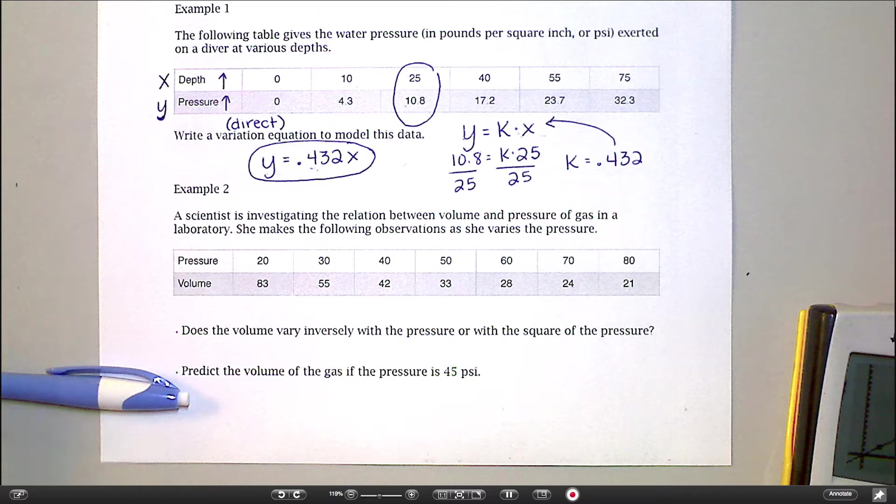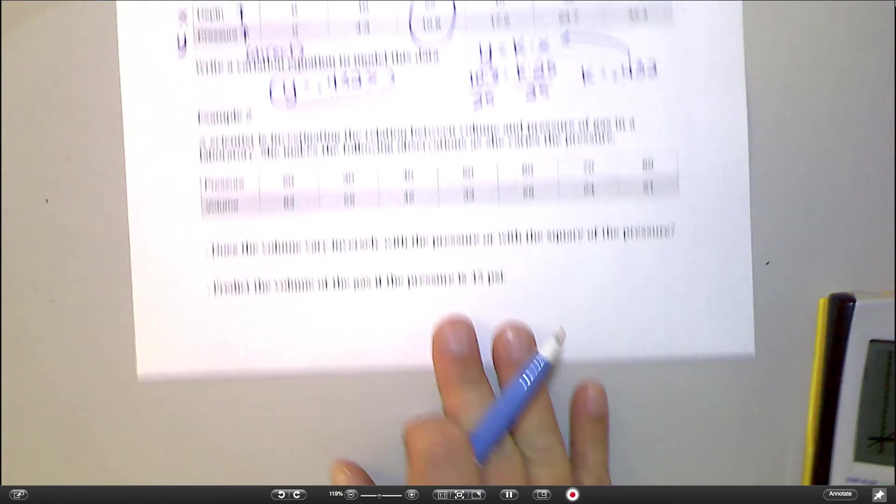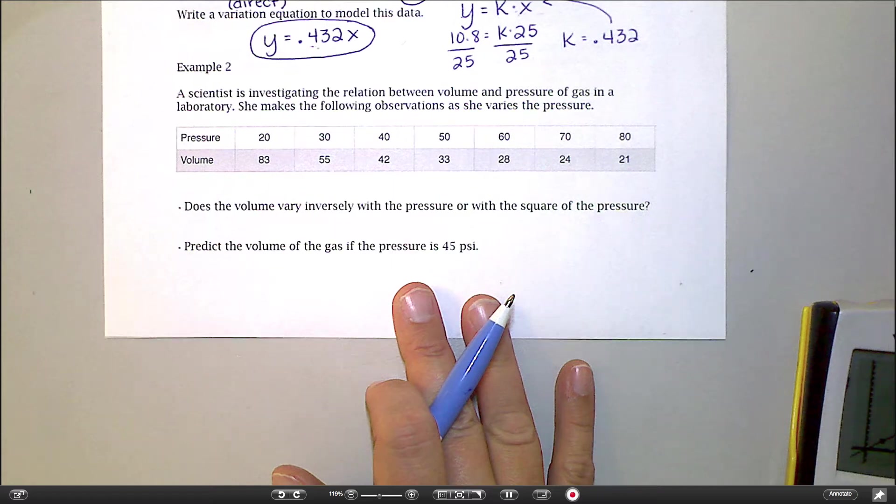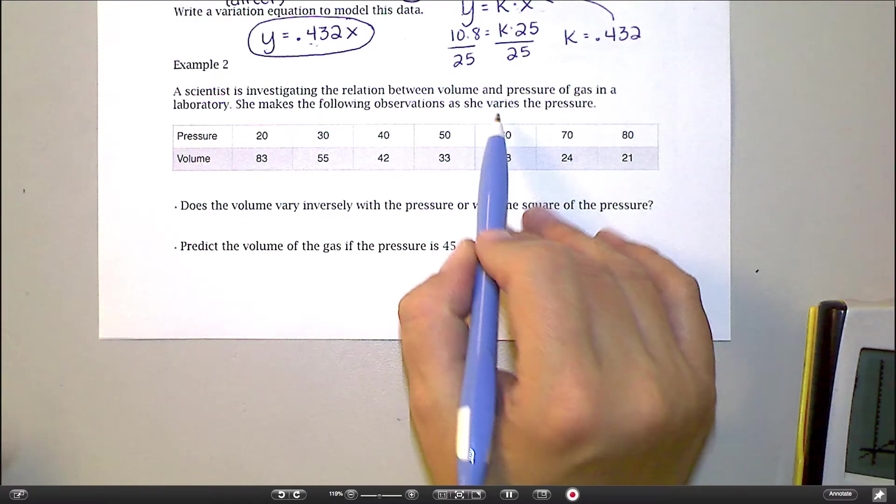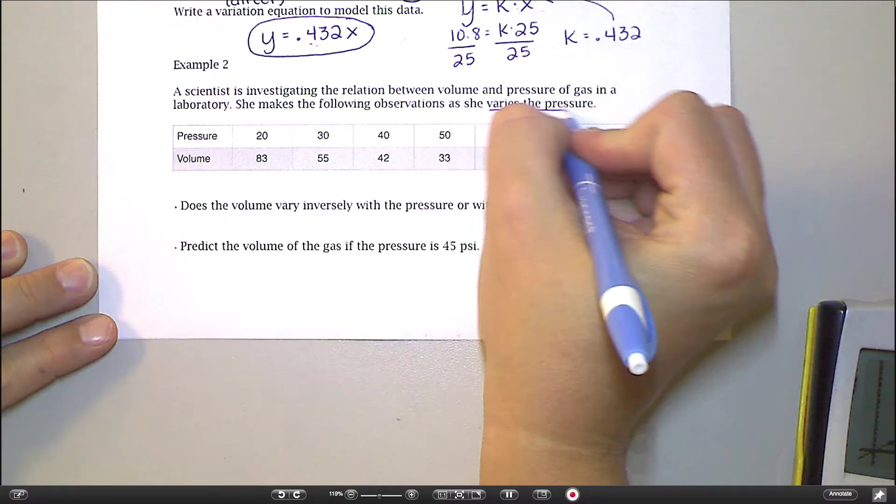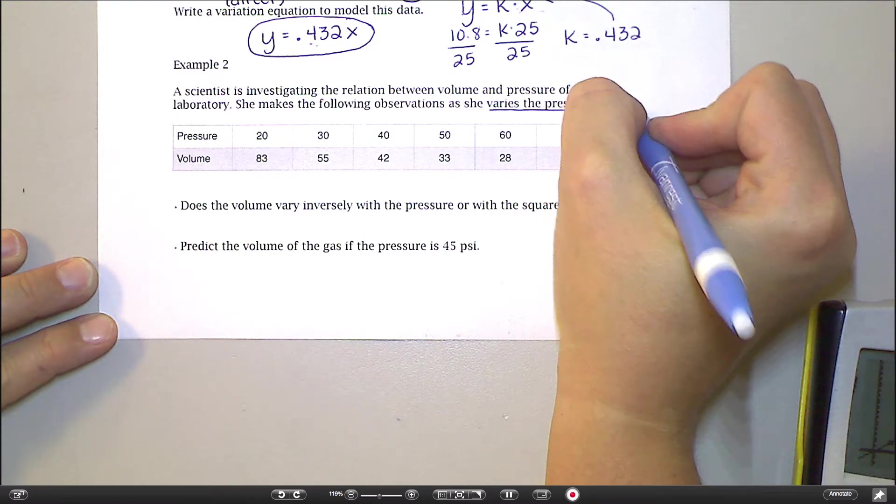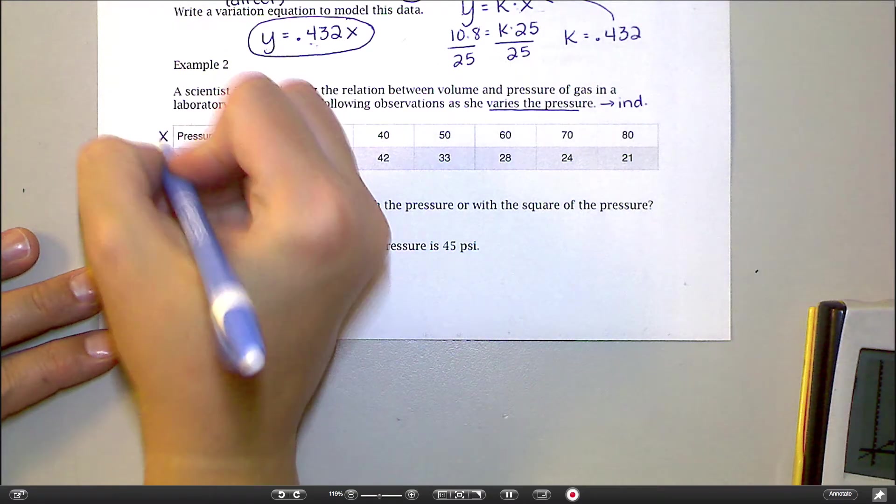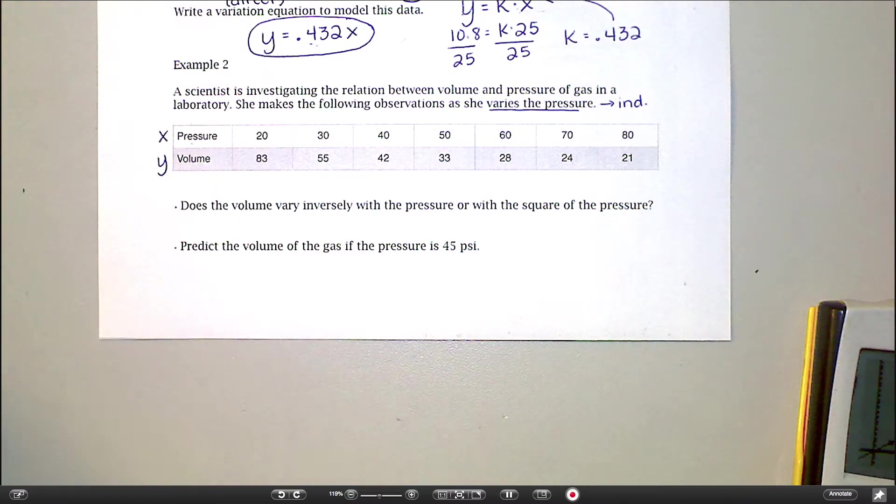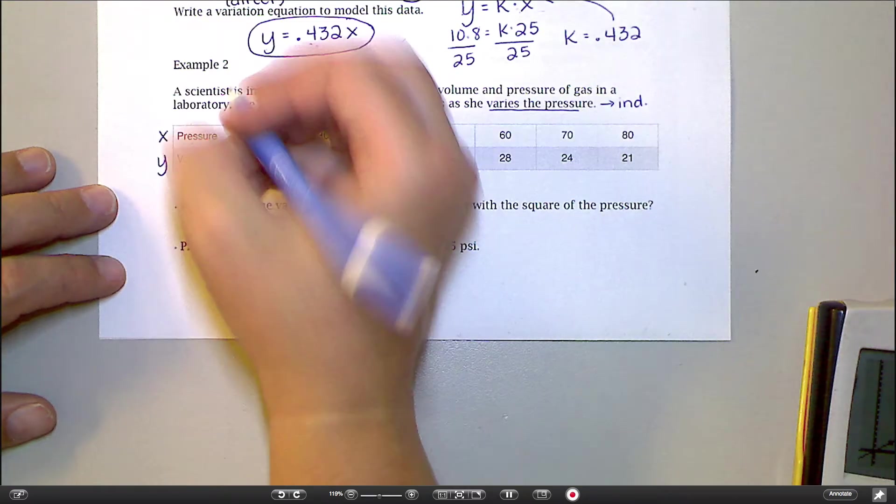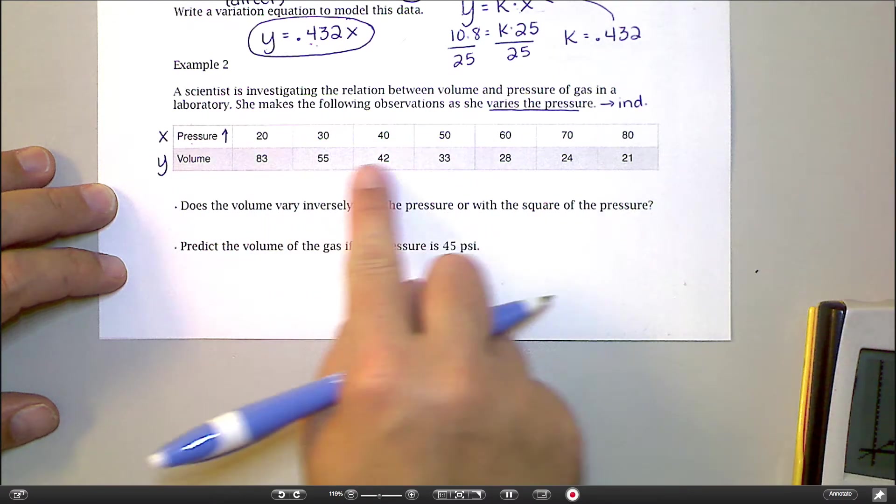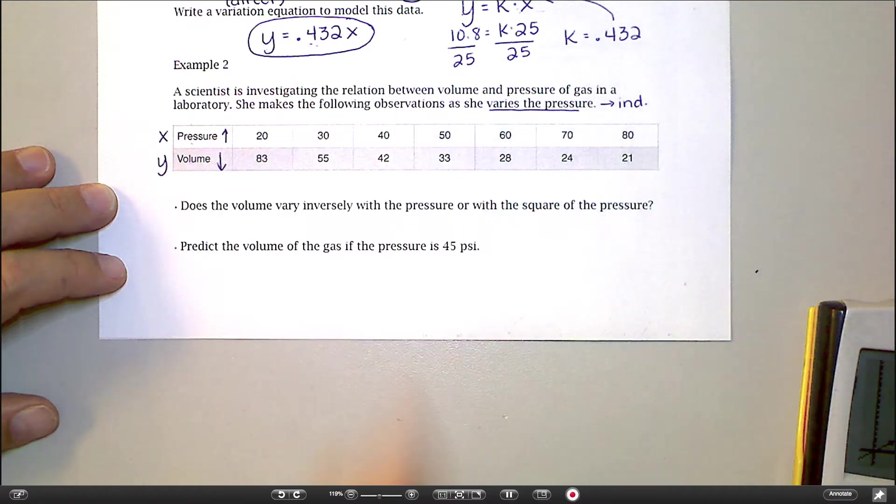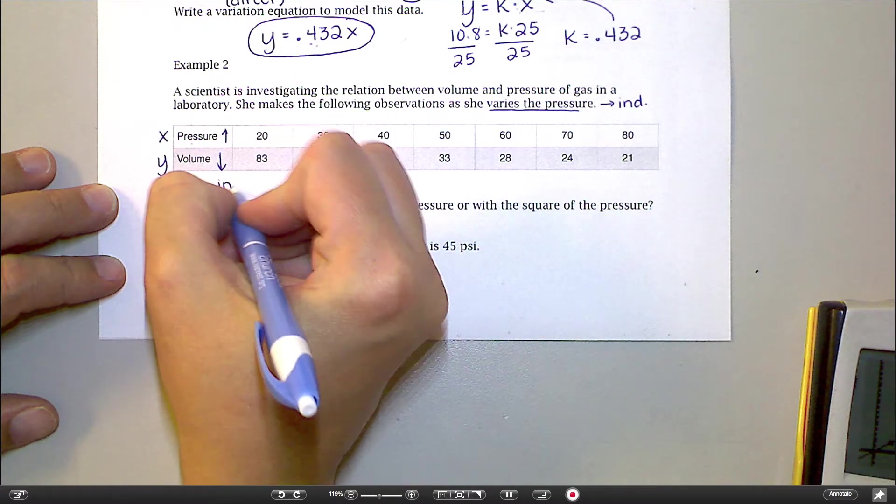All right. So that's about it for the first one. Let's move on to the second one. And there is something a little bit trickier with example two. So this time with example two, we're looking at the difference between volume and pressure of a gas. And notice it says she varies the pressure. This right here tells you that your pressure is going to be your independent variable because this is the one that she's controlling. So this is my X. And then I'm measuring the volume based on what the pressure is. And this time, do you notice that as the pressure is getting bigger, if I'm making these numbers bigger, look at what's happening to my volume. It's getting smaller. So I know that this is inverse variation just based on that.